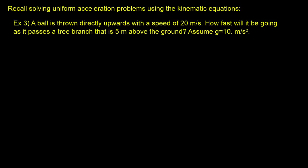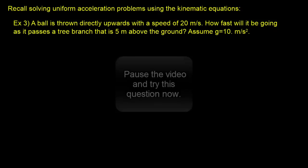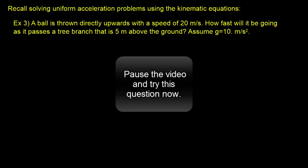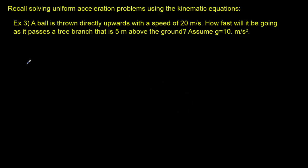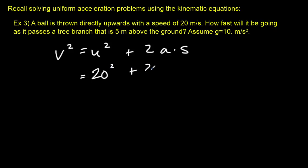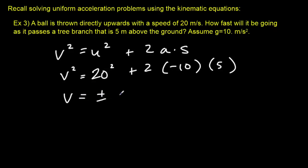Now I'd like you to indulge me with an old kinematics problem — pause the video and try it. Since time is not involved, we use the no-time equation: v² = u² + 2as. Plugging in an initial speed of 20 m/s, acceleration of −10, and displacement of 5, we get v = 14.4 meters per second. There are two answers since it could be going upward or downward at 14.4.